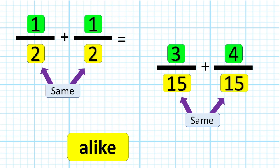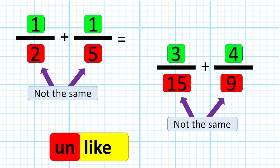They are alike. We have 1/2 add 1/2, we have 3/15 add 4/15, they are alike. If the denominator is the same, we call them like fractions. And if they are not alike, we call them unlike fractions. And we need a solution to adding unlike fractions.